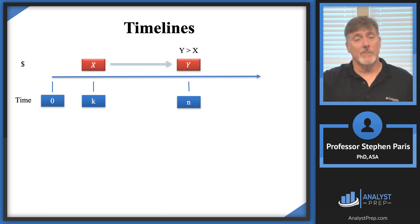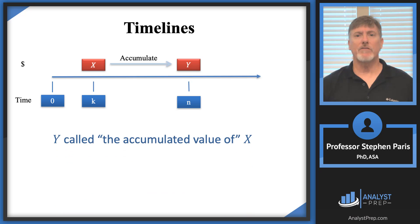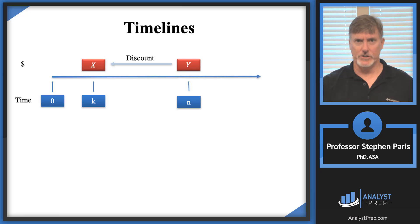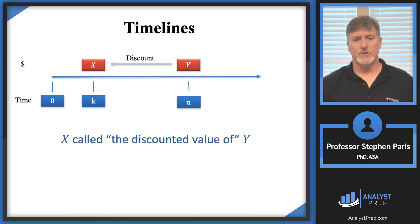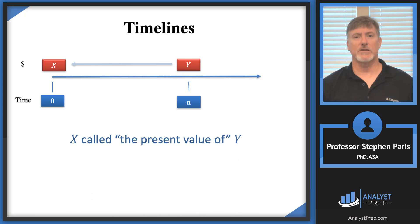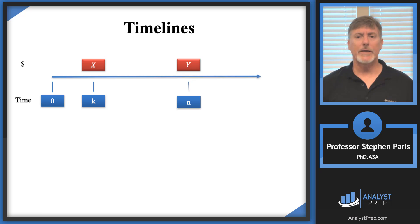When we move money forward in time, we say we accumulate the money, and CAPY is called the accumulated value of CAPX. Moving money backward in time is discounting — CAPX is called the discounted value of CAPY. There's a special case: if we discount all the way back to time zero, CAPX is called the present value of CAPY. For the rest of this video I'll be interested in mathematically relating the CAPX and CAPY values, since they're not equal to each other.